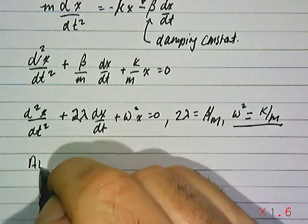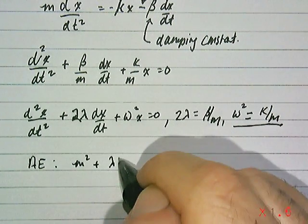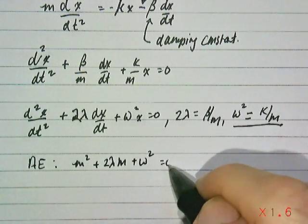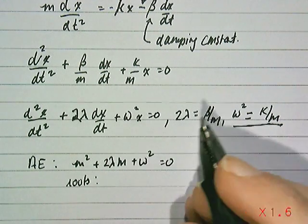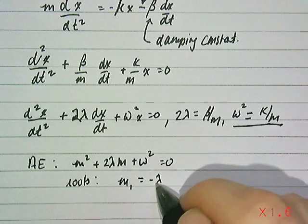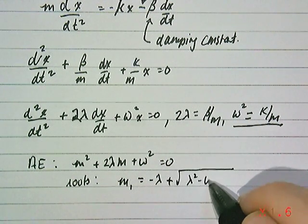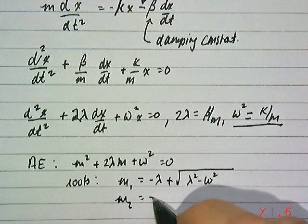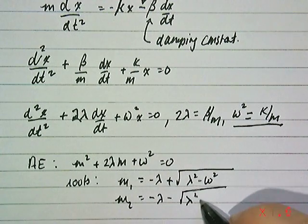If we look at the auxiliary equation for this linear second order, the auxiliary equation would be m² plus 2λm plus ω² equals zero. Your roots would be m₁ equals -λ plus the square root of λ² minus ω², and the other one is the same thing, you just subtract the radical.